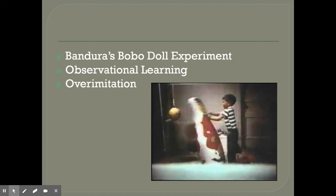Half of these children just played in the playroom, while the other half had watched one of his assistants do violent actions towards an inflatable doll he called the Bobo doll — one of those dolls that bounces back every time you hit it. The instructor hit it, kicked it, punched it, and yelled mean things at it. Then, when he put those kids who had watched that into the playroom one at a time, many of them carried out the violent actions they had witnessed on that same Bobo doll.